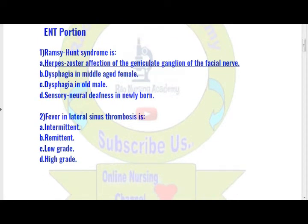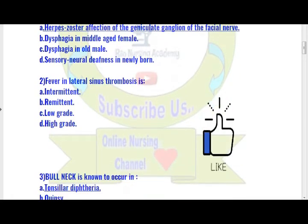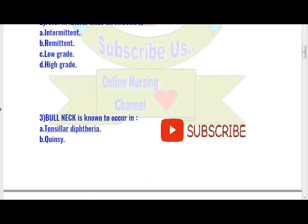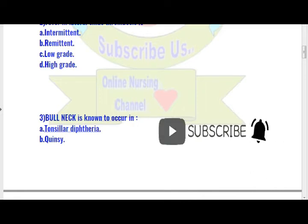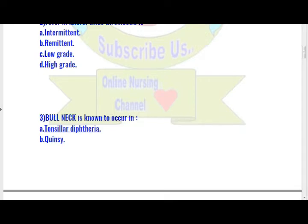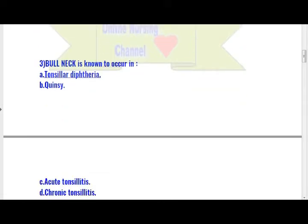Next, question number 3. Bull neck is known to occur in which condition? Bull neck occurs in anterior sinus thrombosis — that is the right answer.